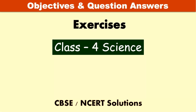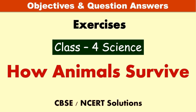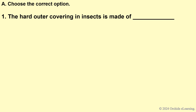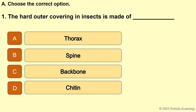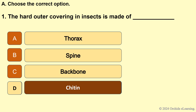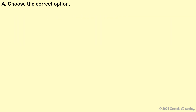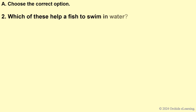Objectives and question answers exercises of the lesson: How Animals Survive, Class 4 Science. Choose the correct option. The hard outer covering in insects is made of chitin. Which of these help a fish to swim in water?